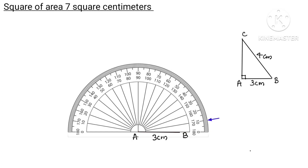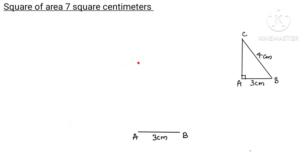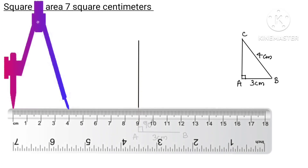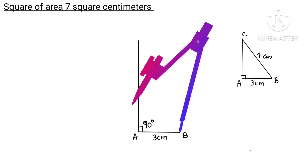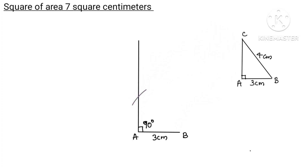Using the protractor: 0, 10, 20, 30, 60, 90 — we mark a point at the centre at 90 degrees angle. Then BC is 4 cm: set the compass length to 4 cm and draw an arc. This arc will meet the point of the perpendicular line.